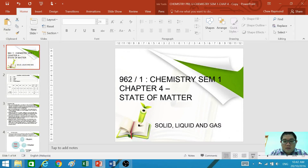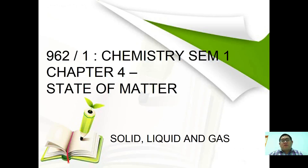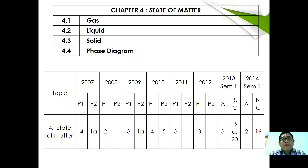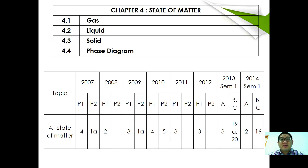We are going to continue with the fourth chapter of semester one where we're going to study states of matter. The content of the lesson covers what is gas, what is liquid, what is solid, and finally phase diagrams. Through passive regression analysis, this chapter has always been one of the hot topics for STPM semester one.